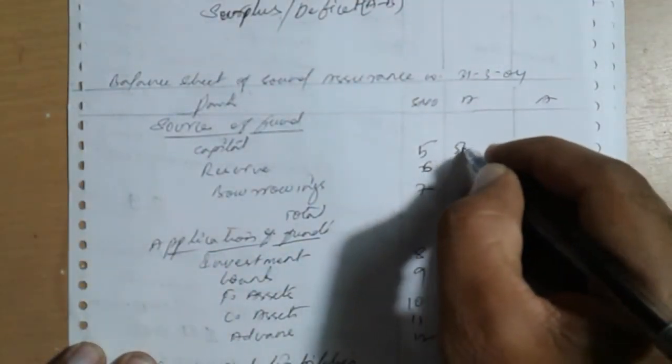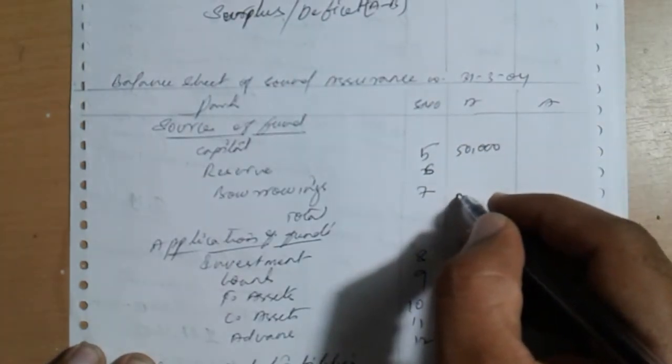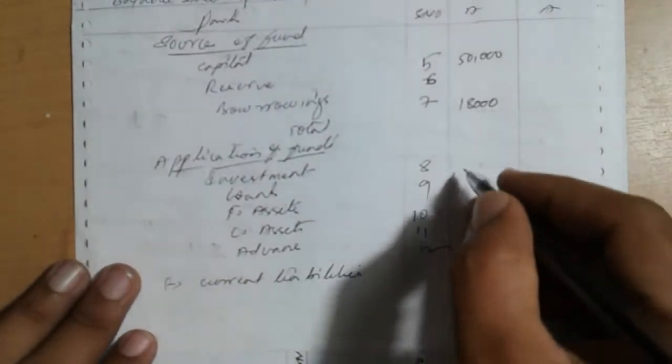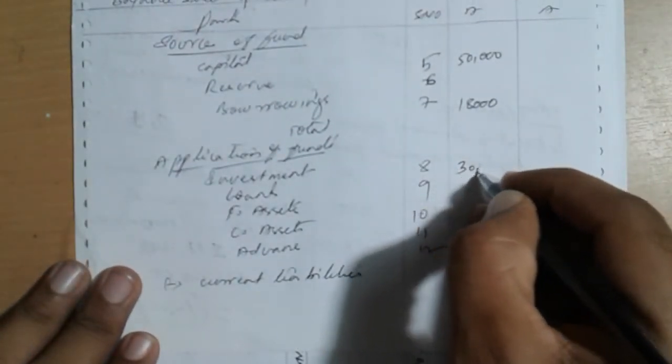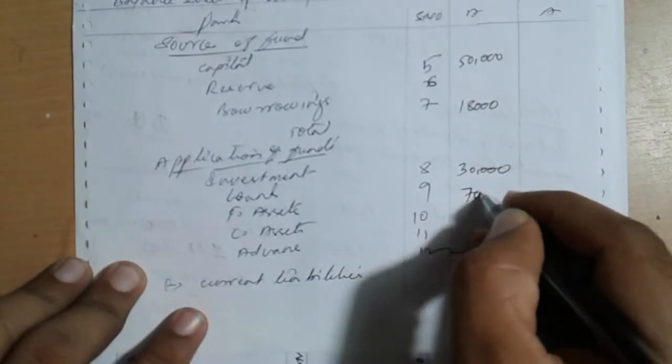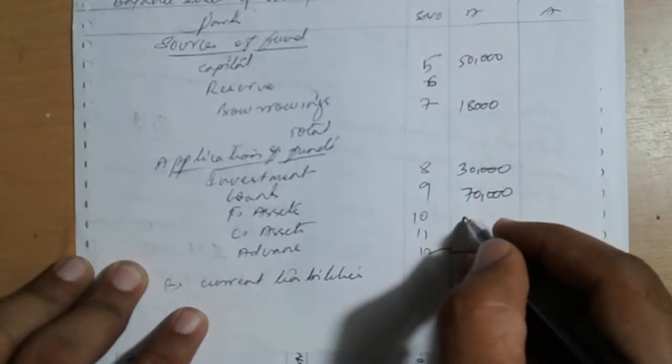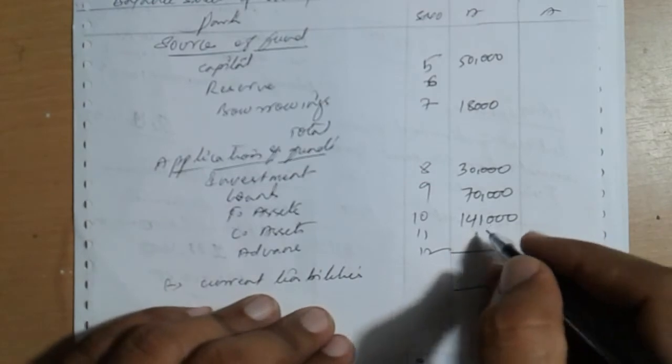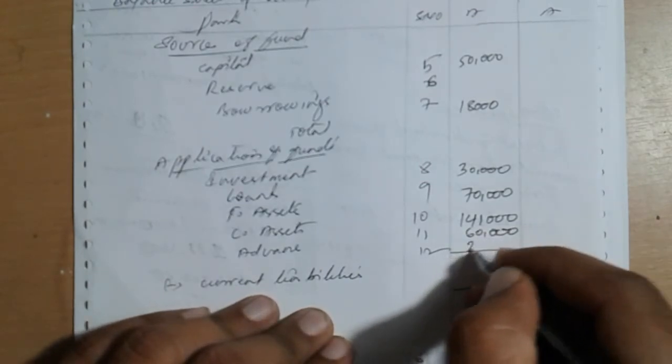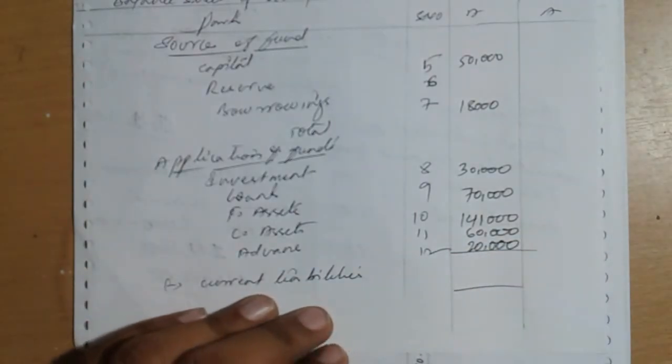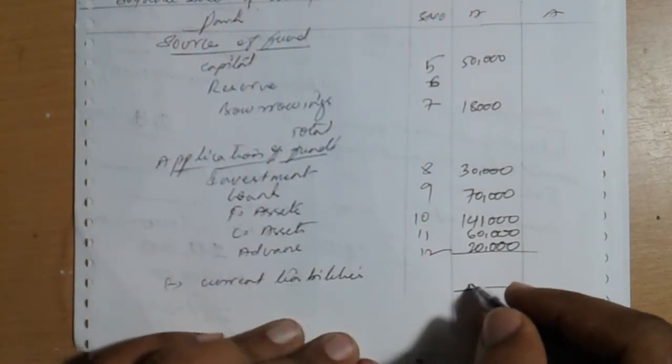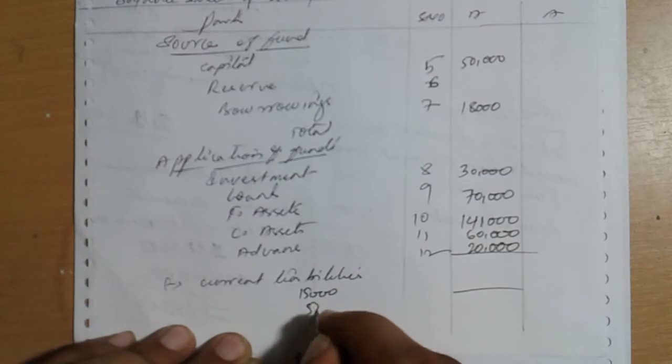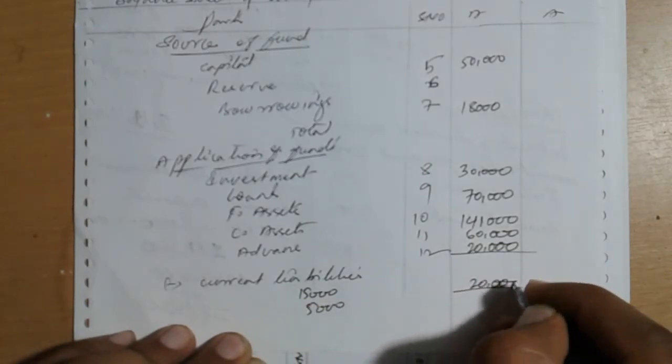Fifth schedule: 50,000. Seven: 18,000. Eight means investment: 30,000. Nine means loans. Ten fixed assets: 141,000. Eleven: 60,000. Twelve: 20,000. Overall current liabilities: 13,000, 15,000. Fourteen: 5,000. Total overall: 20,000. Current liabilities. Total. First do this.